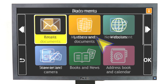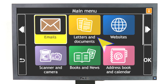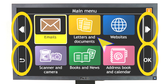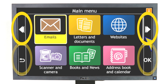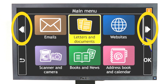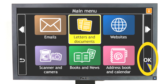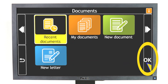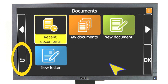You can also control GuideConnect by using the side buttons located at the edges of the screen. Click the Next and Previous buttons to move through the items. Click the OK button to select an item. And click the Back button to go back to the previous screen.